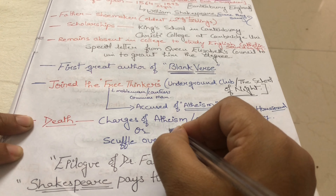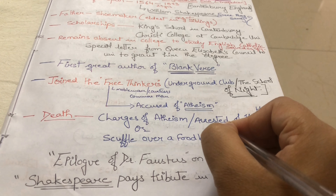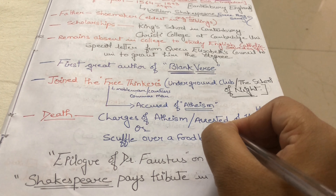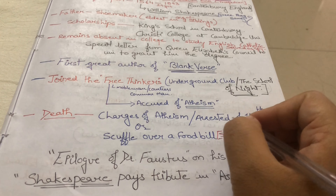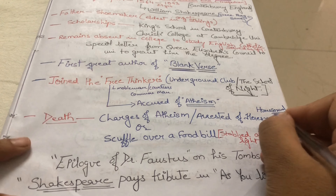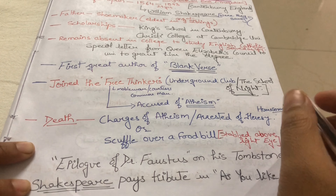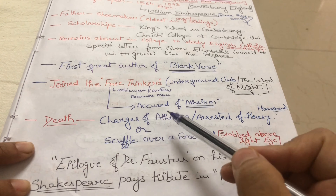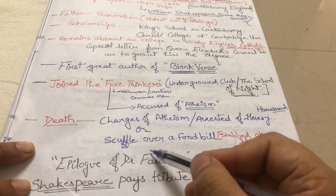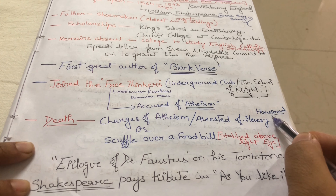Some people say that after his arrest, a government official killed him and the scene was staged. He was also said to be homosexual, and some say that because of his homosexuality, enemies caused his death. So his death is not clearly established. Other contributing factors were charges of atheism and his homosexuality.